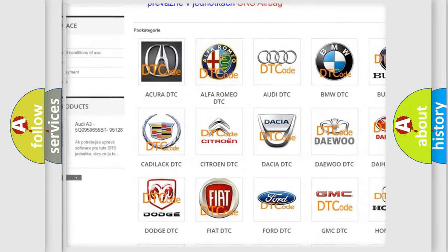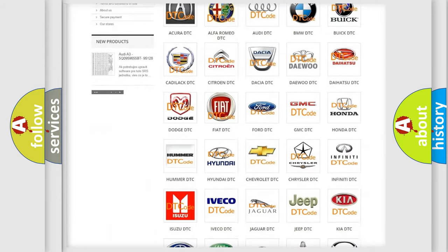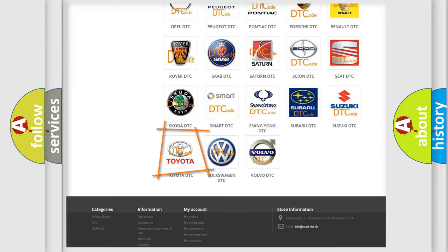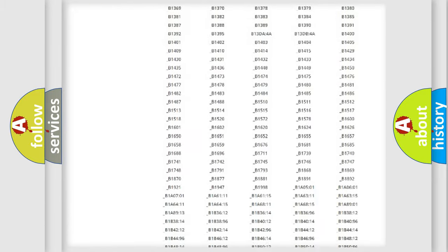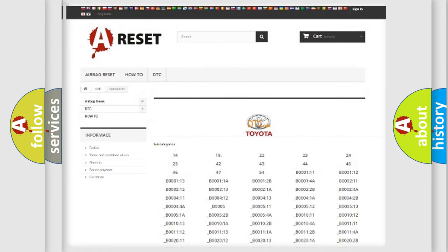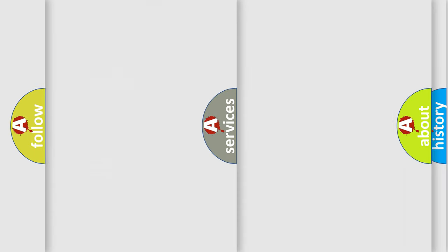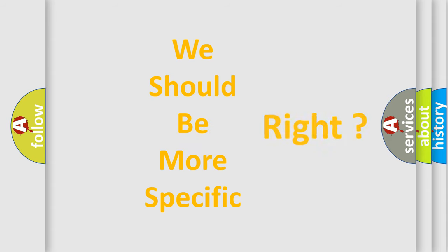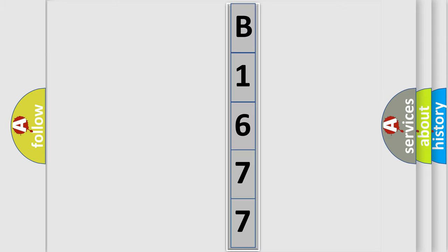Our website airbagreset.sk produces useful videos for you. You do not have to go through the OBD2 protocol anymore to know how to troubleshoot any car breakdown. You will find all the diagnostic codes that can be diagnosed in Toyota vehicles, and many other useful things. The following demonstration will help you look into the world of software for car control units.